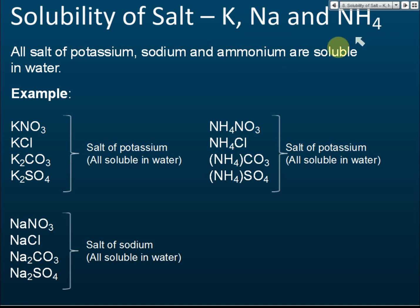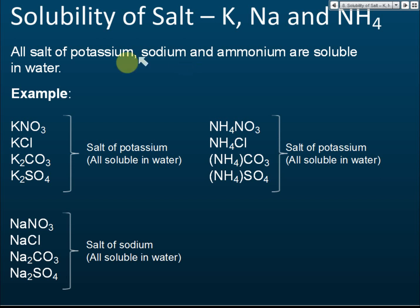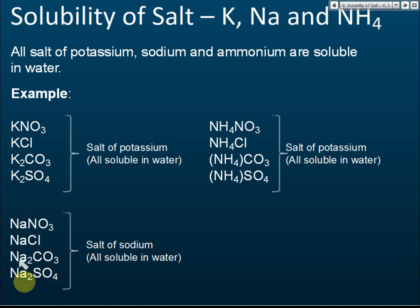The solubilities of potassium, sodium, and ammonium: all ionic compounds of potassium, sodium, and ammonium are soluble in water. No matter what the salt is, as long as it contains potassium, sodium, or ammonium, it's soluble in water. For example, potassium nitrate, potassium chloride, potassium carbonate — all soluble. Sodium nitrate, sodium chloride, sodium carbonate, sodium sulfate — all soluble. Ammonium nitrate, ammonium chloride, ammonium carbonate, ammonium sulfate — all soluble.